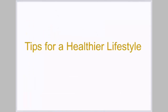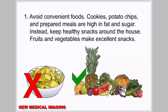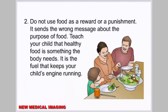You can have a major impact on your child's health by making some small changes. Tip 1: Avoid convenient foods like cookies, potato chips, and prepared meals that are high in fat and sugar — keep healthy snacks like fruits and vegetables around the house instead. Tip 2: Do not use food as a reward or punishment, as it sends the wrong message. Teach your child that healthy food is what the body needs — the fuel that keeps your child's engine running.